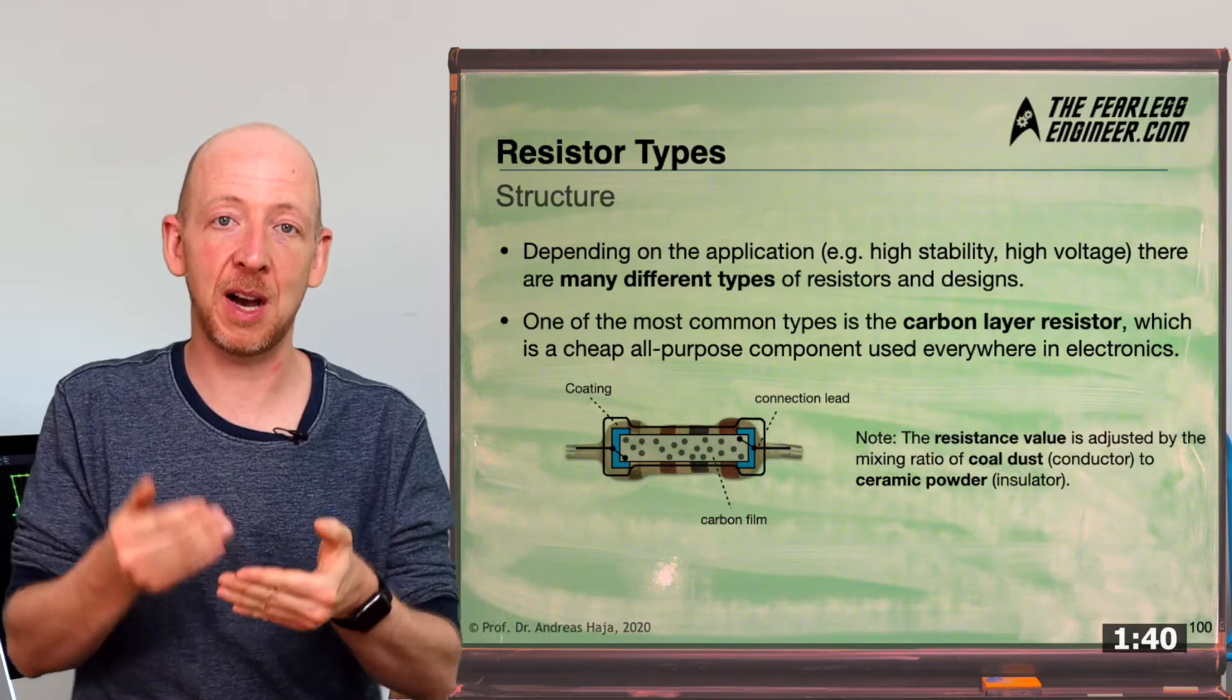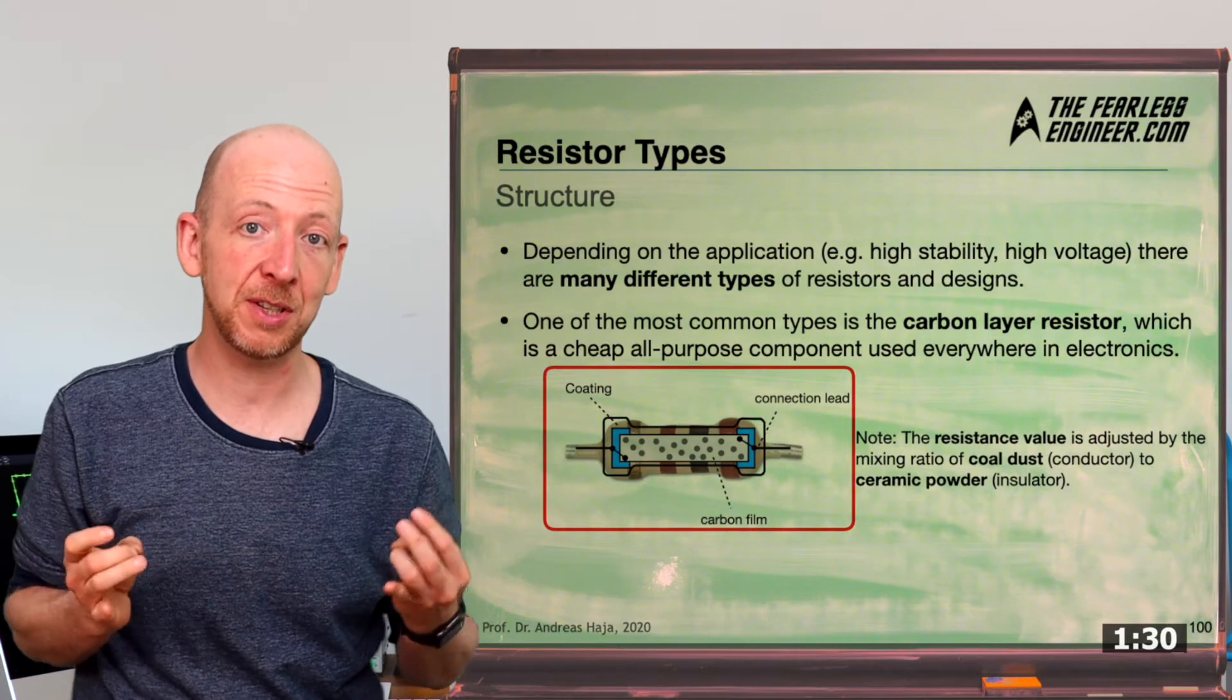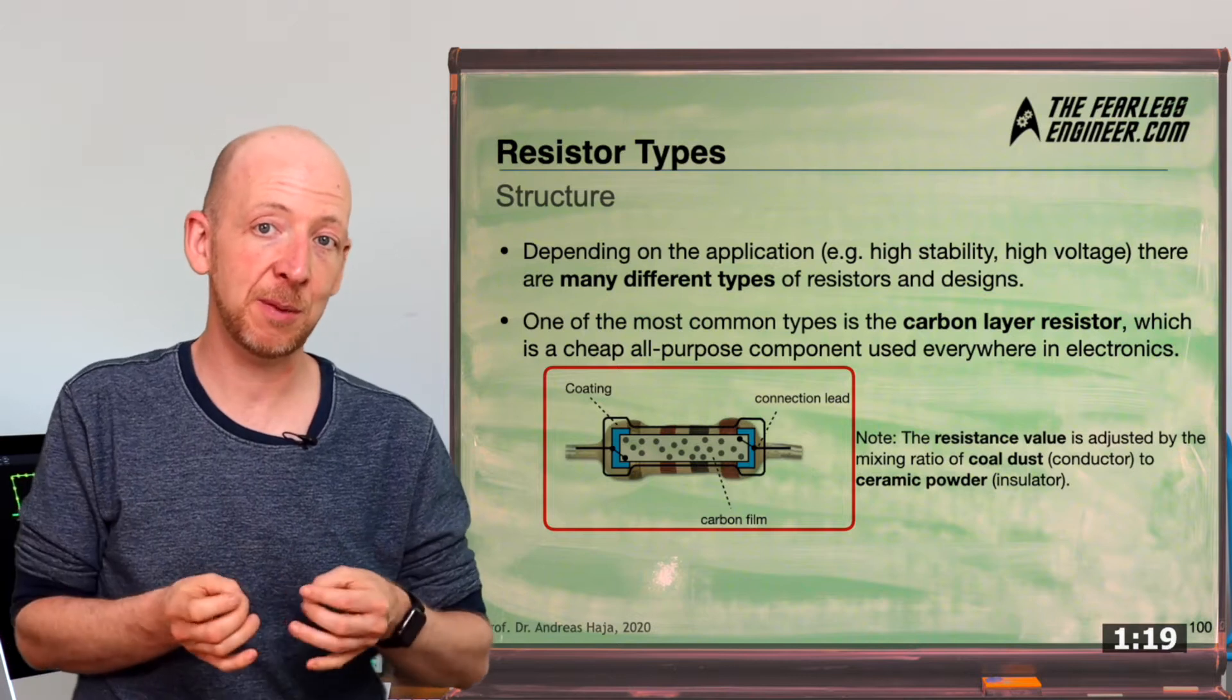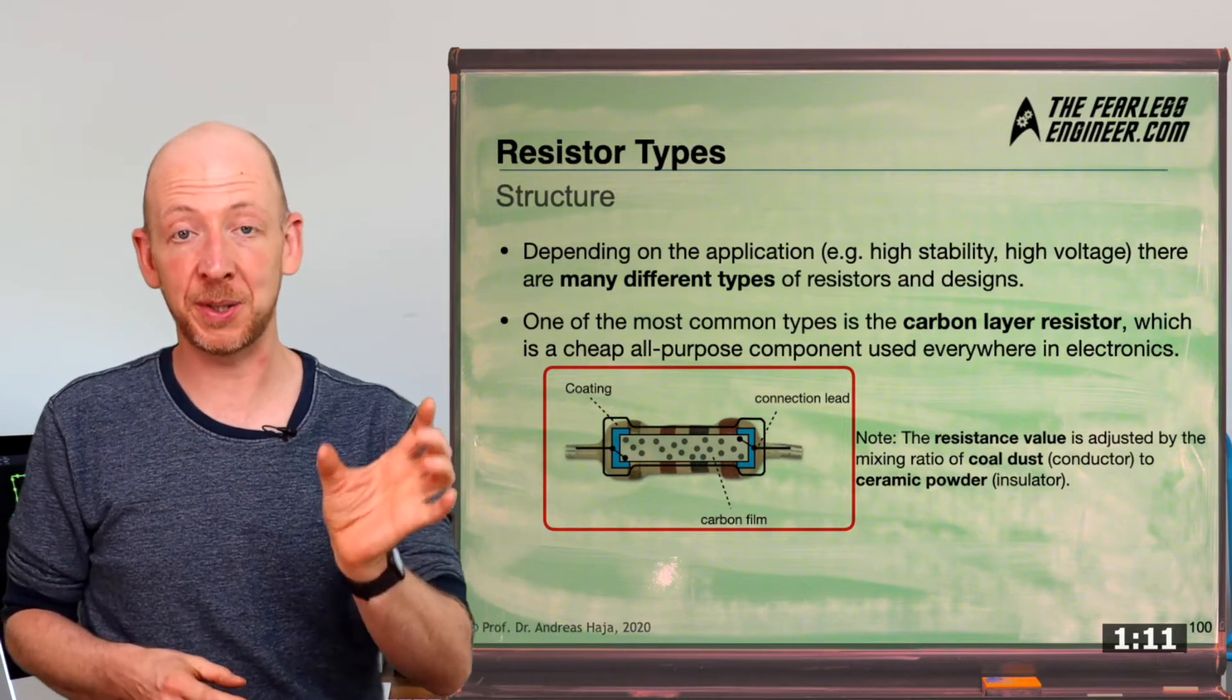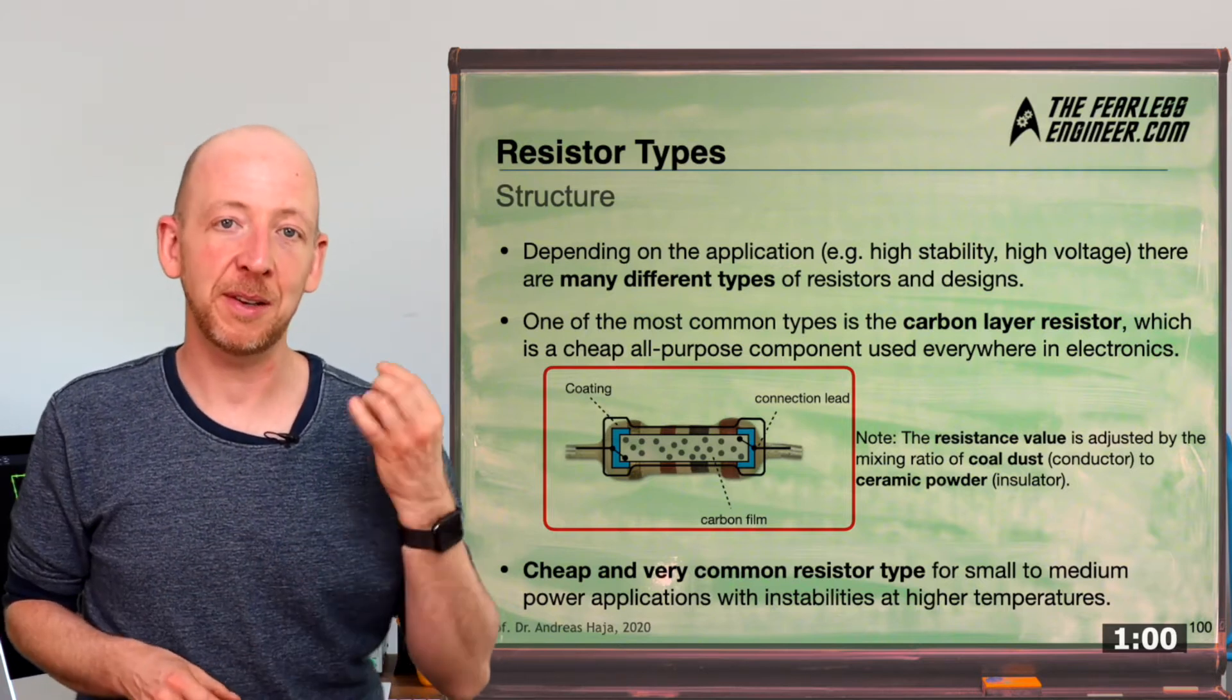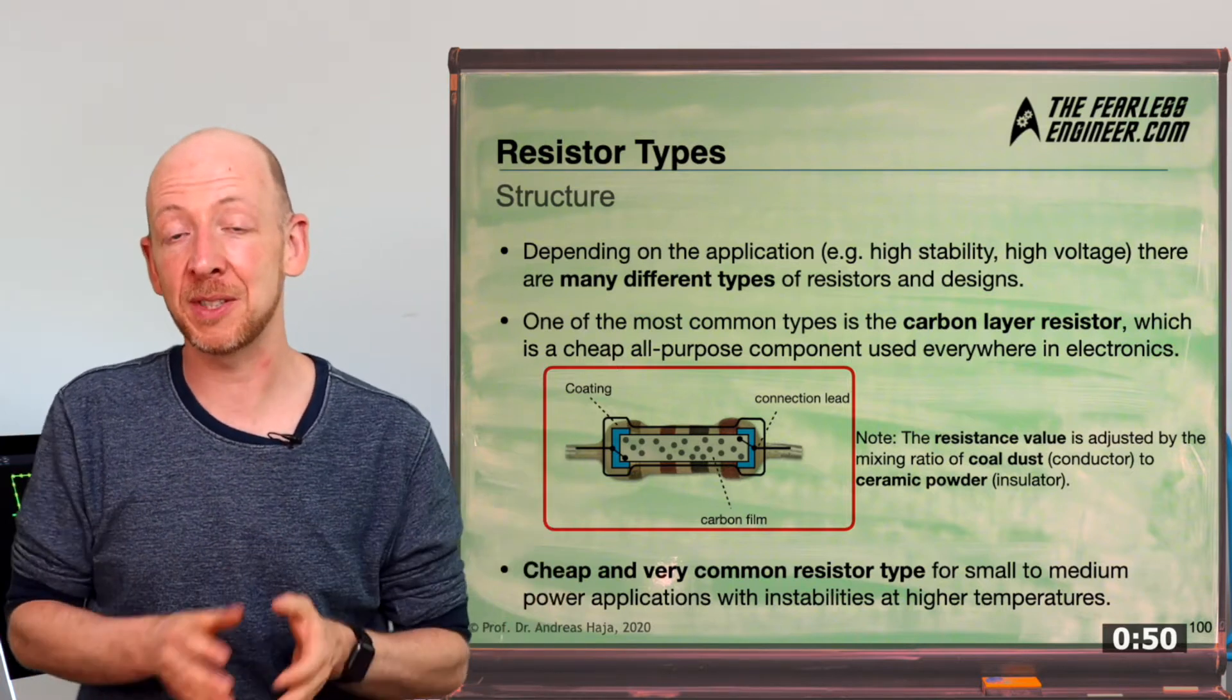One of the most common resistor types is the so-called carbon film resistor. This is a very cheaply produced component, which can be used for all kinds of applications across all areas of electronics. In the diagram, you can see its schematic structure, the small housing with the colored rings is the resistor coating. And beneath it, we can see the actual carbon layer, which is produced with a mixture of coal dust and ceramic powder. The coal dust is the conductor, while the ceramic powder is the insulator. Now, in summary, it can be said that the carbon layer resistor is very cost-effective, but you have to pay a little attention to the operating temperature, because this resistor tends to become unstable when temperatures are high.